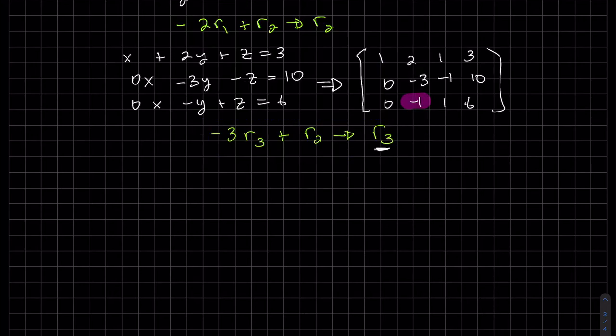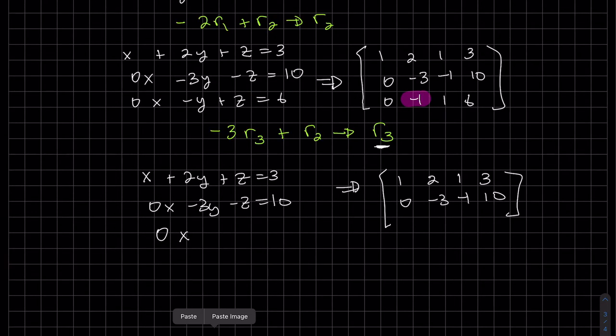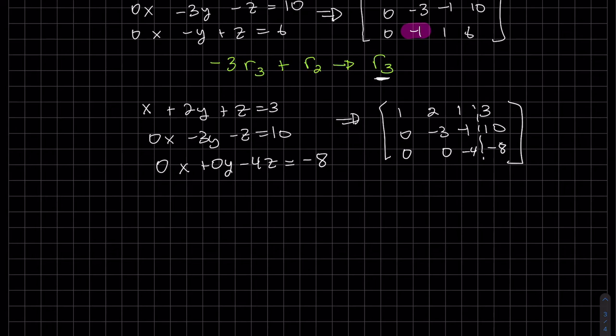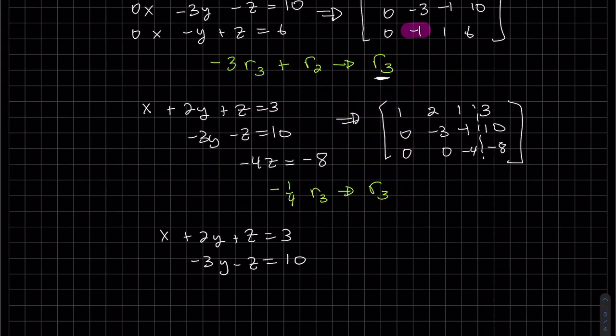Here we're basically only changing row three. The first two rows are spared. Minus three row three plus row two to row three, it's still zero. Minus three row three is positive three y plus three y is zero y. Minus three row three is minus three, minus one is minus four. Minus 18 plus 10 is minus eight. Looks like we could divide. We could divide or multiply by one-fourth, dividing this by negative four.